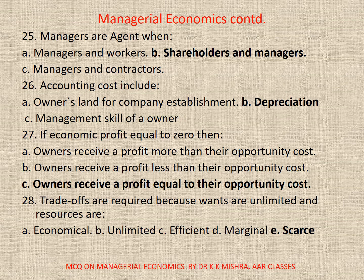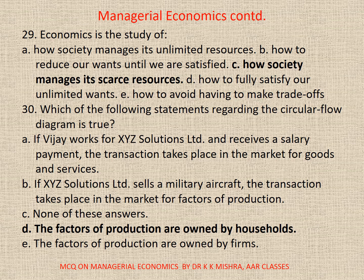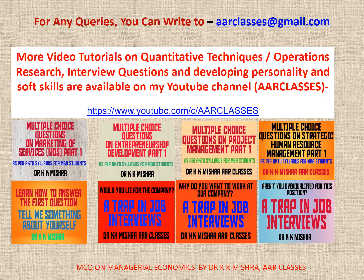Question 26: Accounting costs include — correct option is B: depreciation. Question 27: If economic profit equals zero, then correct option is C: owners receive a profit equal to their opportunity cost. Question 28: Trade-offs are required because wants are unlimited and resources are — correct option is E: scarce. Question 29: Economics is the study of — correct option is C: how society manages its scarce resources. Question 30: Which of the following statements regarding the circular flow diagram is true? Correct option is T: the factors of production are owned by households.